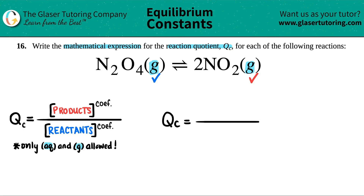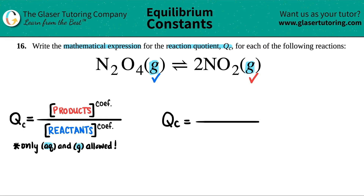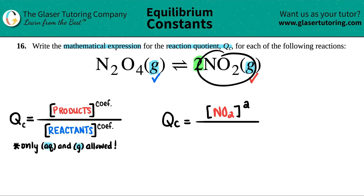The QC formula is products divided by reactants. Let's work with the products first. My compound is NO2, so I put the brackets — that's the notation. I'm going to write NO2. When writing your QC formula, you don't write the states, but I have to raise it to its coefficient. There was a 2 in the front, so I raise this to the second power. That's the only product.